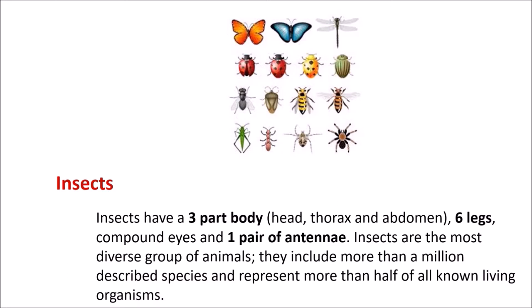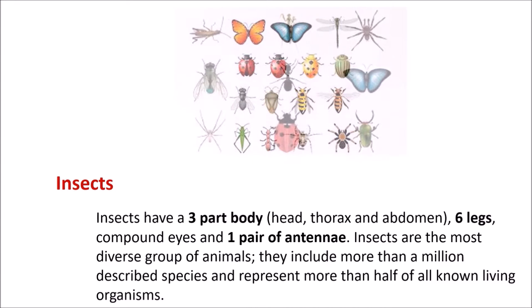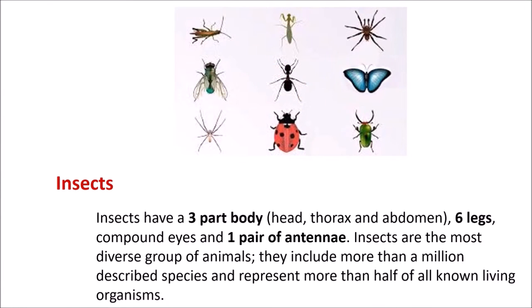The second category of very small animals who can fly are the insects. Insects have a three-part body: head, thorax, and abdomen. They have six legs, compound eyes, and a pair of antennae. Insects are the most diverse group of animals — they include more than a million described species and represent more than half of all known living organisms.